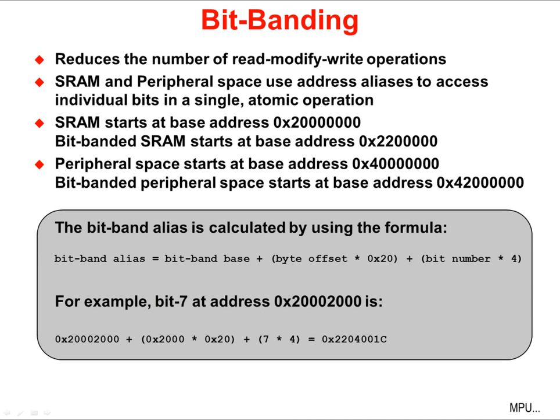Tiva C-Series devices utilize bit-banding. This can reduce the number of read-modify-write operations done in your code. SRAM and peripheral space use an address alias to access individual bits in a single atomic operation. Physical SRAM memory starts at a base address of 0x20000000; the bit-banded alias of that memory starts at base address 0x22000000. Peripheral space starts at a base address of 0x40000000; bit-banded peripheral space starts at a base address of 0x42000000. To calculate the bit-banded alias, use the formula here. The code we'll be using in the lab does this at runtime.